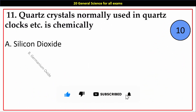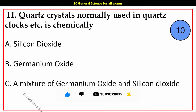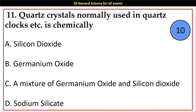Question number 11. Quartz crystals normally used in quartz clocks, etc., are chemically: Options A. Silicon Dioxide, B. Germanium Oxide, C. A mixture of Germanium Oxide and Silicon Dioxide, D. Sodium Silicate. Answer: A. Silicon Dioxide.